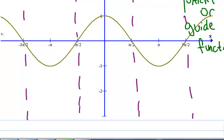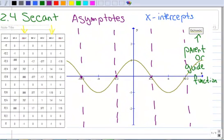So if you know where the cosine is zero, then you automatically know where your secant has asymptotes.